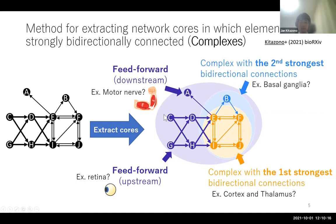The subnetwork E-F-I-J, shown in orange, is the complex with the strongest bidirectional connections. And the subnetwork B-E-F-I-J is the complex with the second-strongest bidirectional connections.